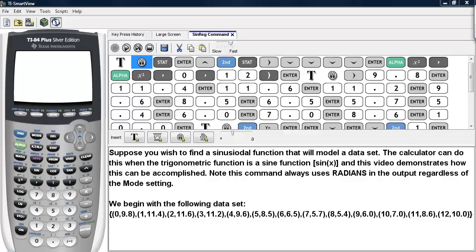Suppose you wish to find a sinusoidal function that will model a dataset. The calculator can do this when the trigonometric function is a sine wave. This video demonstrates how this can be accomplished. Note that this command always uses radians in the output, regardless of the mode setting.